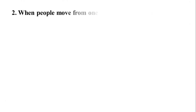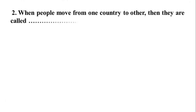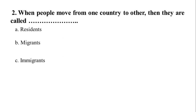Question number two: when people move from one country to another, they are called? Option A: residents. Option B: migrants. Option C: immigrants. Option D: emigrants. The correct answer is B: migrants.